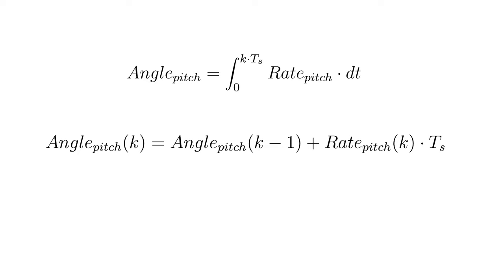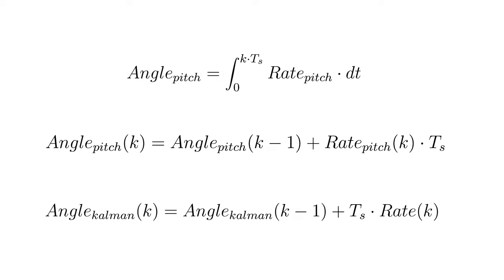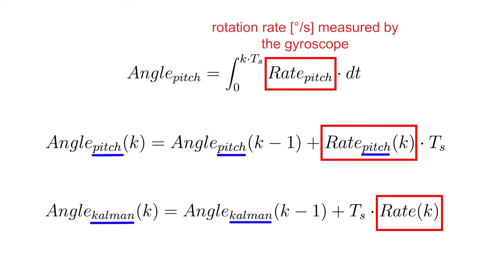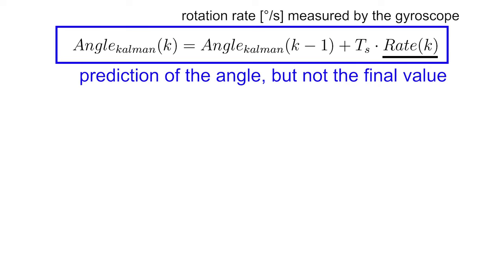Let's start with the integration of the rotation rate, which we derived in part 14. In order to derive the Kalman filter, let's change the notation of the angle and call it the Kalman angle. Remember that the rotation rate in degrees per second is measured with a gyroscope. Now let's assume that the resulting angle is not its final value, but merely a prediction.